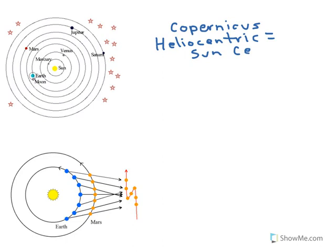Copernicus was able to work out the order of the planets in this system. In the diagram, we have the Sun at the center, then Mercury, Venus, Earth — where now the only thing orbiting Earth is our Moon — then Mars, Jupiter, and Saturn. Notice it stops at Saturn because these are the only planets visible to the naked eye. During the time of Copernicus, the telescope had not yet been invented, so these were the known planets. Beyond Saturn, he envisioned a field of stars out in the heavens.